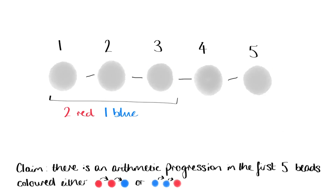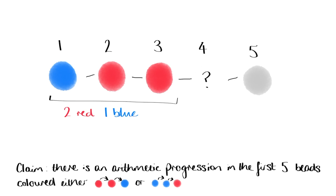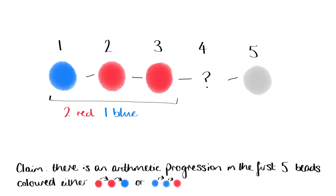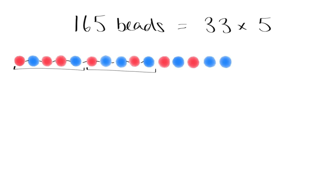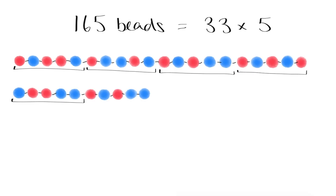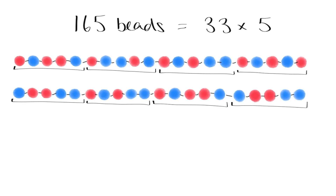Finally, if the first three beads are blue-red-red, then the fourth bead has to be blue, to avoid 2-3-4 being monochromatic. This then makes 2-3-4 a red-red-blue progression. Now suppose we take 165 beads and break them up into 33 blocks of 5. Remember, we're trying to show that we run into problems if we try and build an arbitrarily long chain of beads with no monochromatic arithmetic progression of length 3.